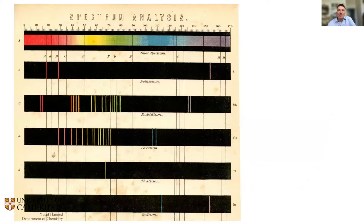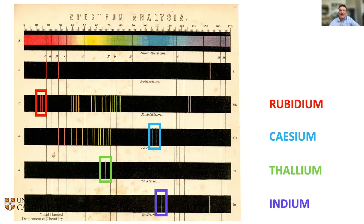We can see these clearly in the spectrum: potassium, rubidium, cesium, thallium, and indium — all named after the appearance of the lines in the spectrum. Cesium has blue lines, rubidium has red lines, thallium the green shoot, and indium the indigo lines.